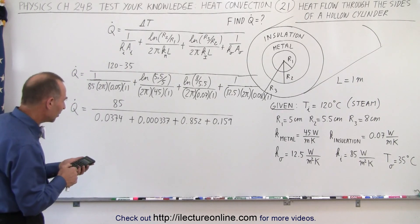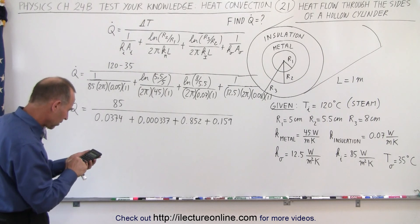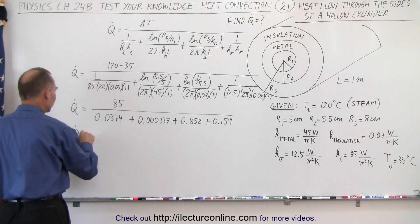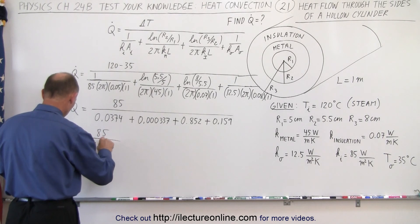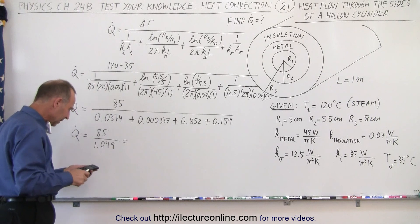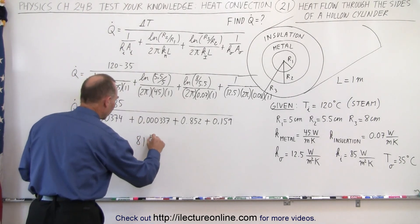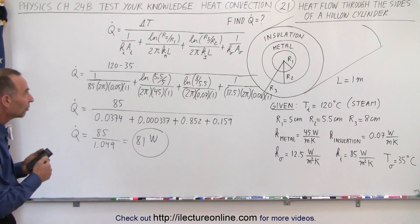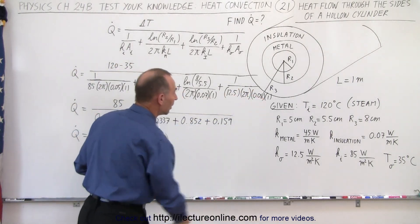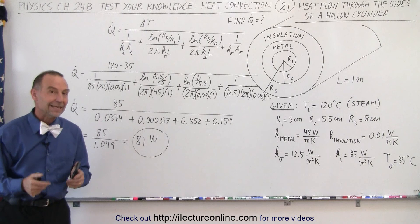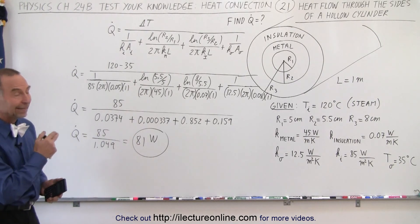Let's add all these up: 0.159 plus 0.852 plus 0.000337 plus 0.0374 equals 1.049. So Q-dot equals 85 divided by 1.049, which gives us 81 watts. That is the answer — heat flow is joules per second or watts, and so we have about 81 watts of heat flowing through the sides of the pipe, which is one meter long. Primarily, the heat flow is blocked by the thick layer of insulation, and secondly by the convection from the insulation to the air.